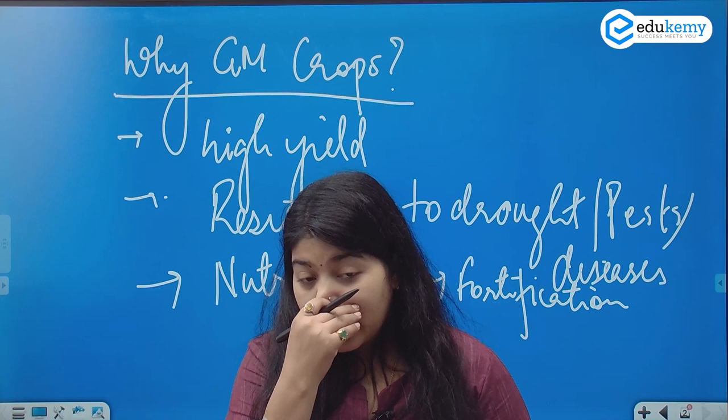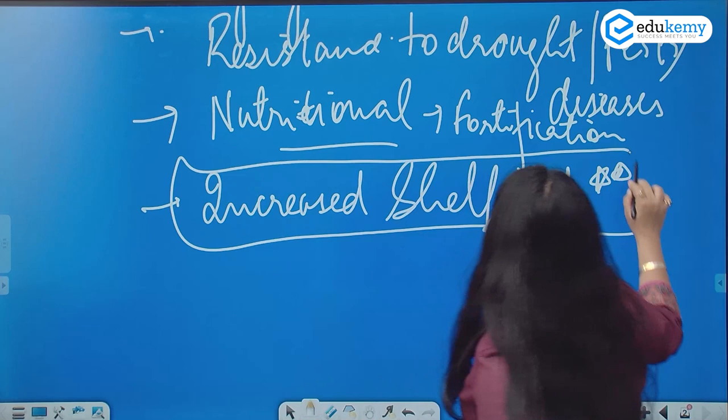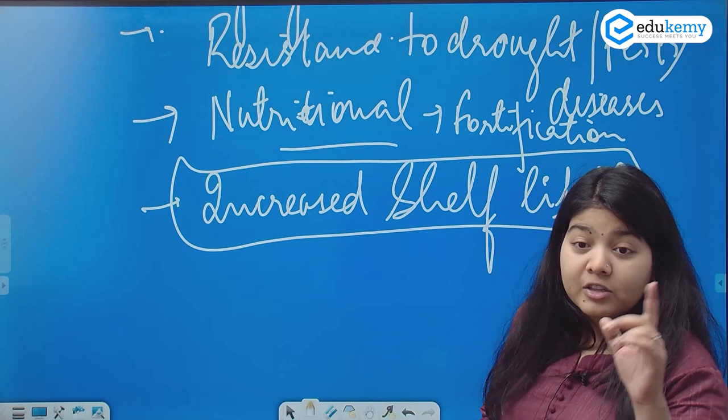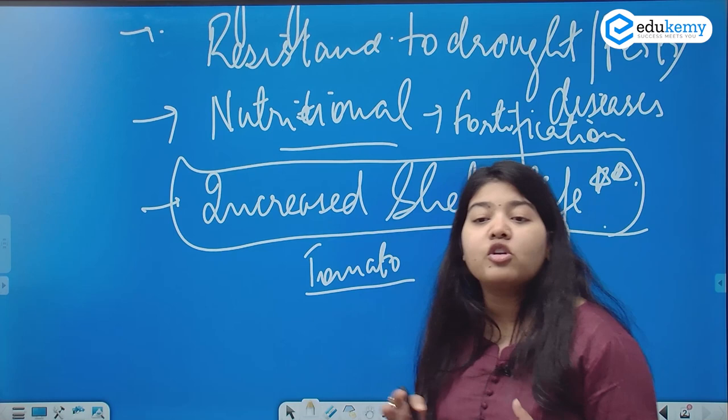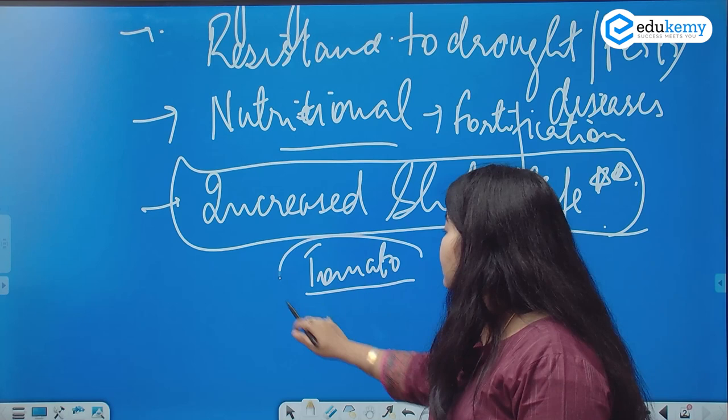This is where the whole story started — increasing the shelf life. Increased shelf life was the first concern. Why? Because you started creating better quality tomatoes. The problem with tomatoes is that consumption is very high but transportation causes a lot of damage to the crop.